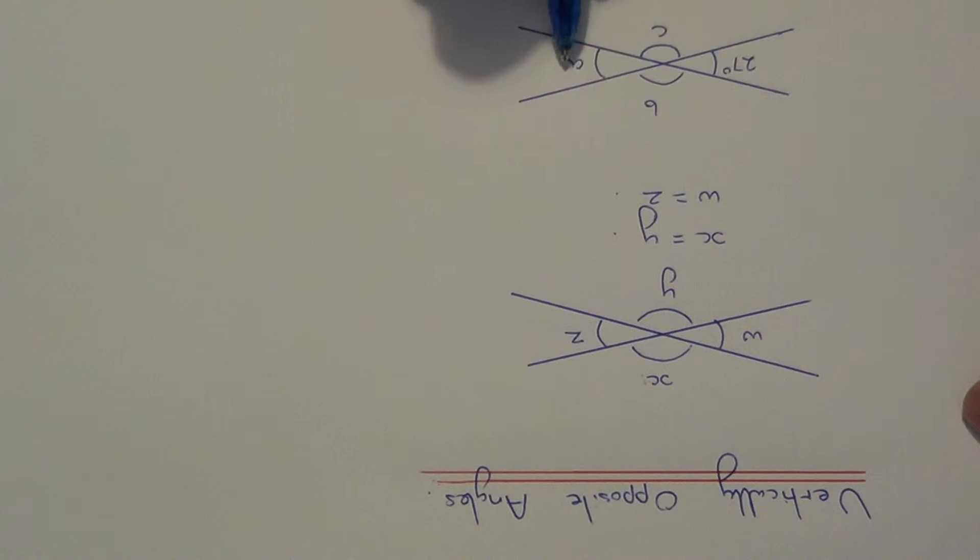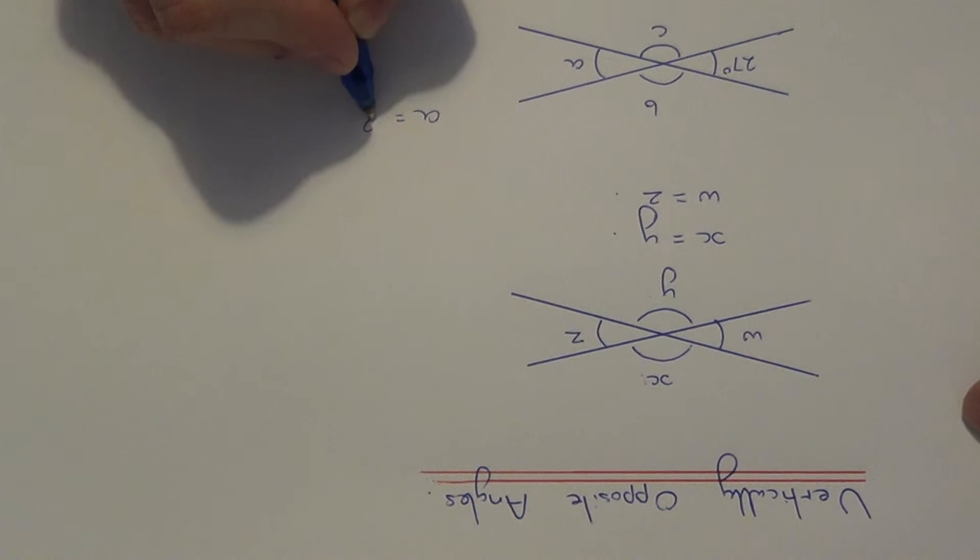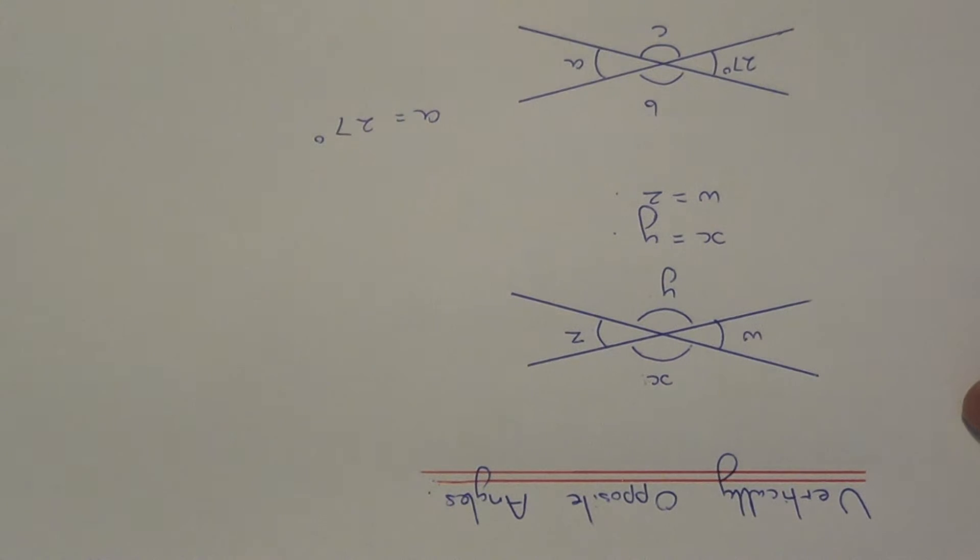Well, first of all, angle A is quite easy. Since it's opposite the 27 degrees, angle A will be 27 degrees because they're vertically opposite.